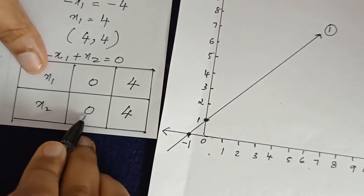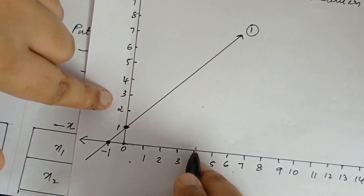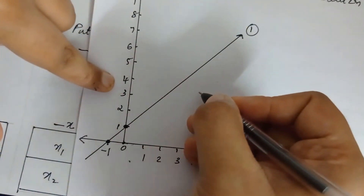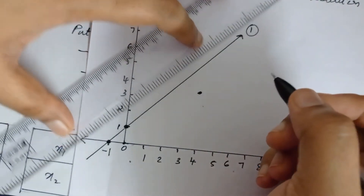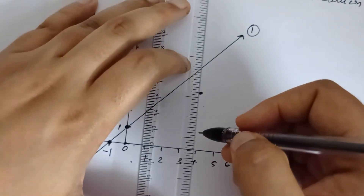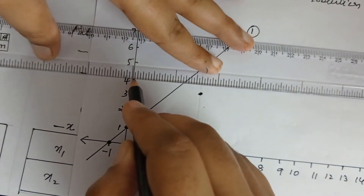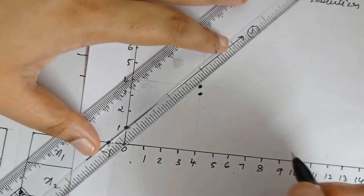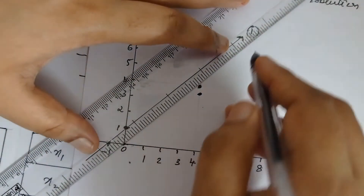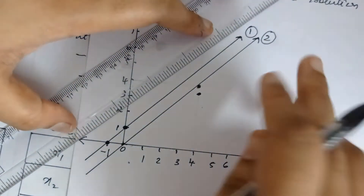For the second constraint, we have points (0, 0) and (4, 4). We draw the line through these two points, labeled as line 2. This line passes through the origin and goes diagonally, representing the second constraint.